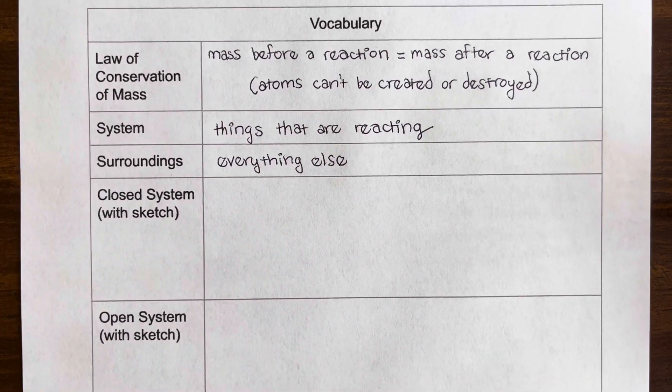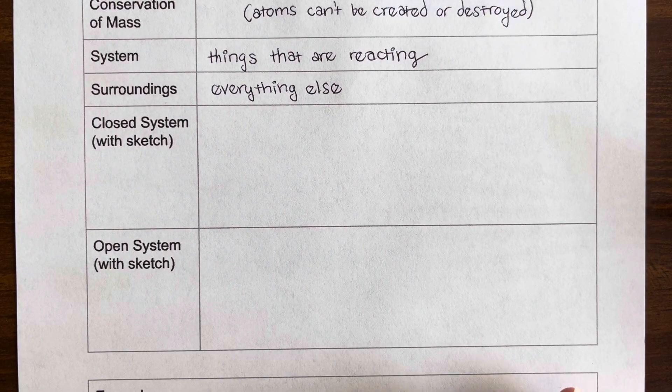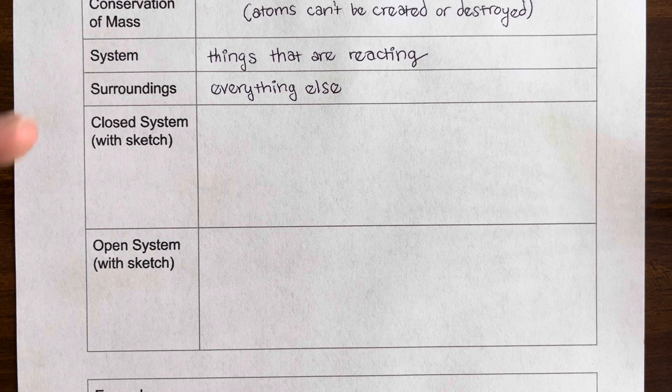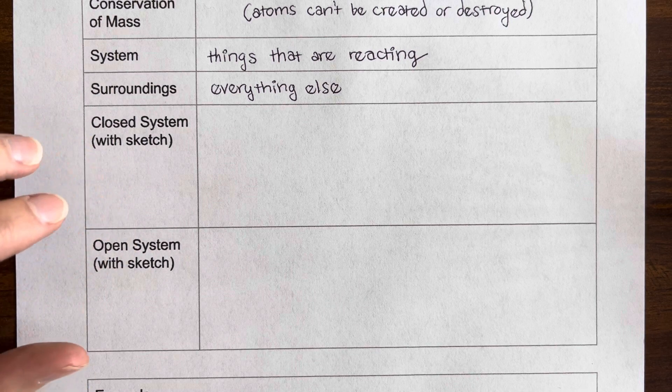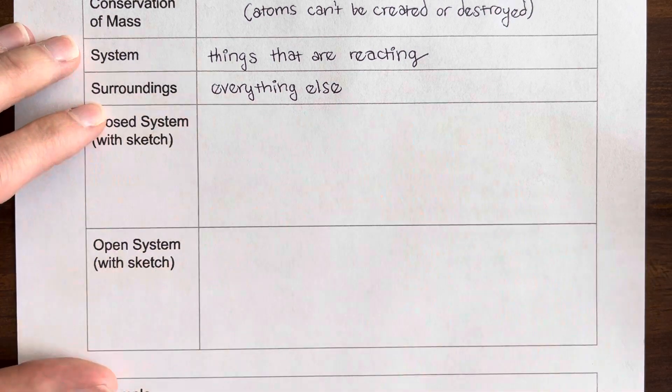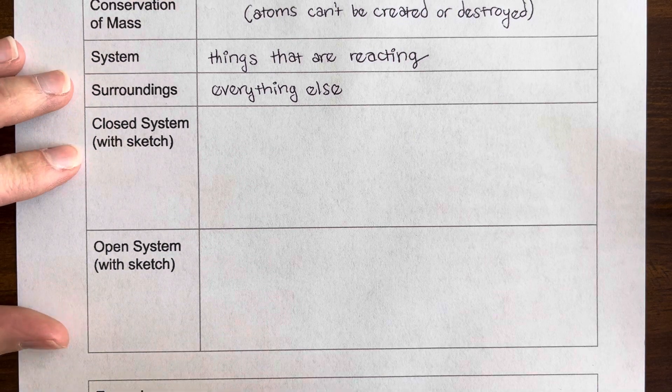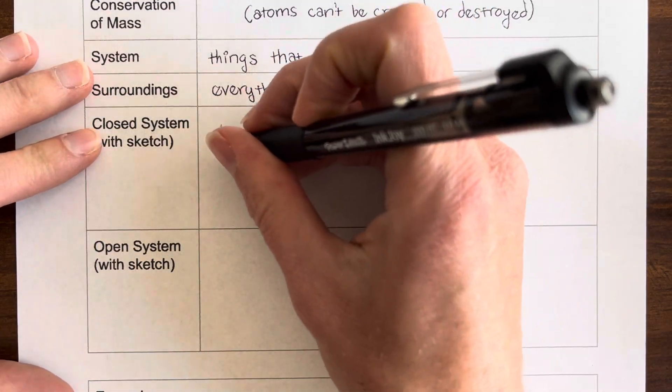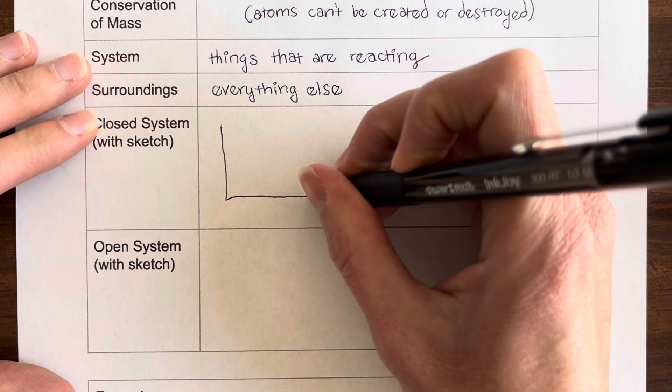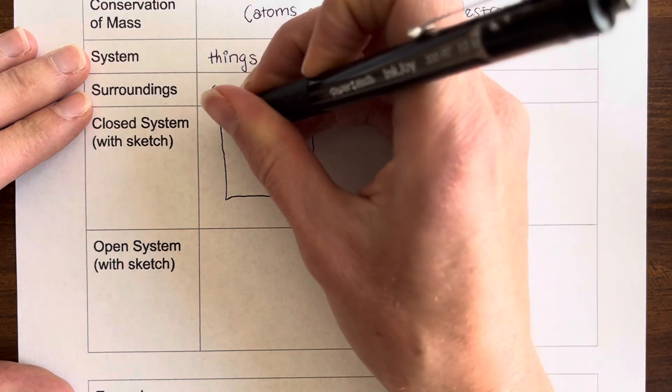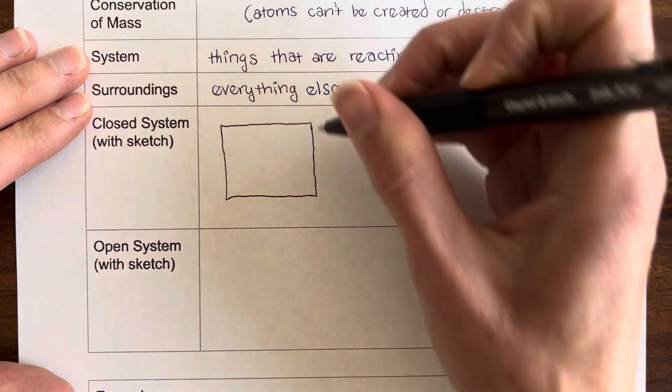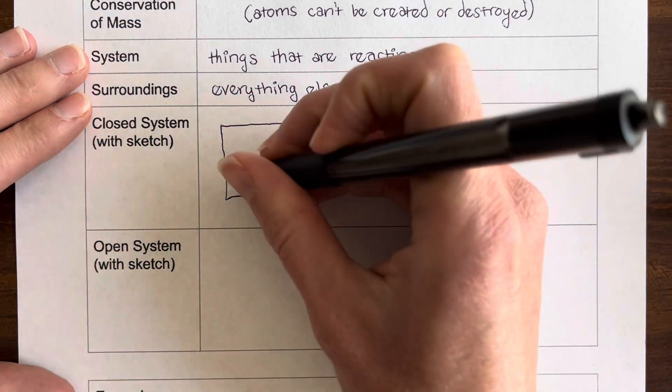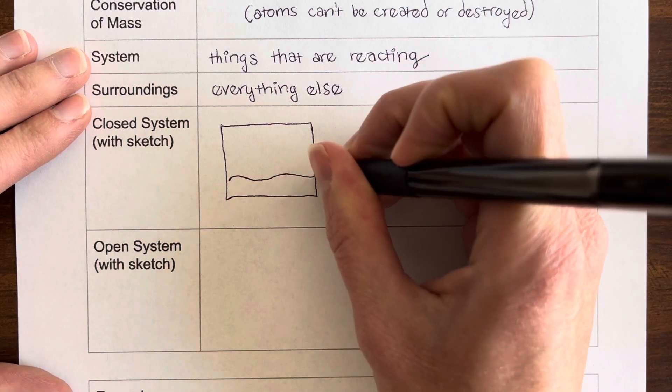Now there are two types of systems that we could have with a reaction: we could have a closed system, or we could have an open system. So let's draw some sketches to understand the difference between these. A closed system might be something like this. Let's say this is a glass tank, and it's got a lid, so it's entirely enclosed. And let's say we're doing a reaction.